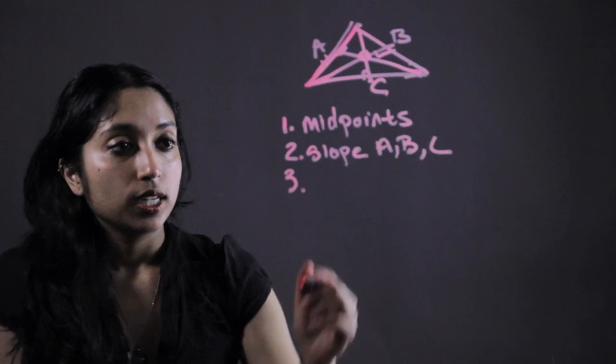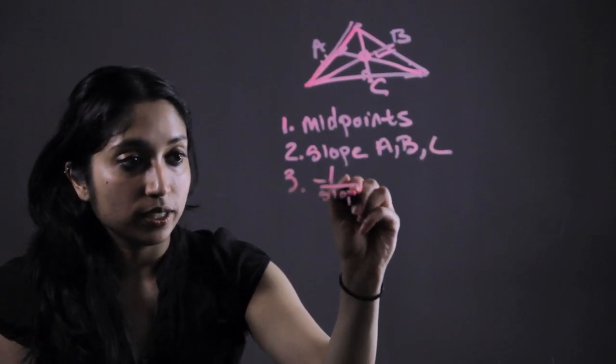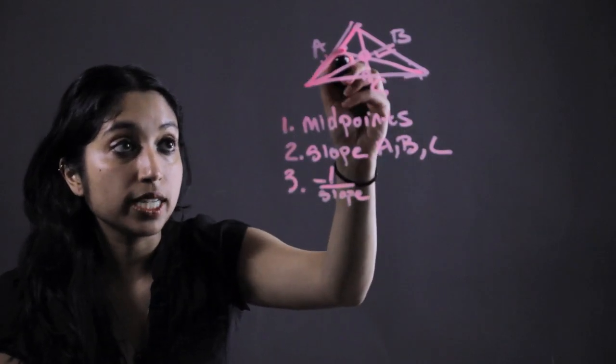Third, we're going to take negative one over the slope of those sides, because that will give us the slope of a line perpendicular to it.